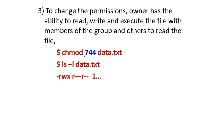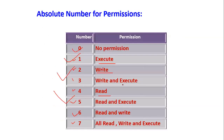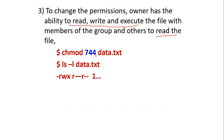For example: the owner has the ability to read, write, and execute the file; group members and others can only read the file. So read permission is 4, giving 7 for owner, 4 for group, and 4 for others — that is chmod 744. This is what representing the permission by using chmod in absolute mode — the chmod command is executed with these steps.